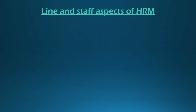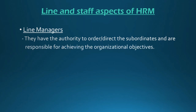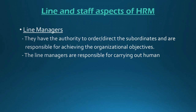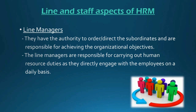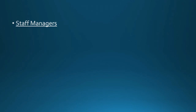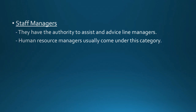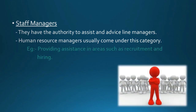Regarding the line and staff aspects of HRM: line managers have the authority to direct their subordinates and are responsible for achieving organizational objectives. Since they directly engage with employees on a daily basis, they carry out certain HR duties — for example, providing training for employees with regard to new projects and tasks. Line managers can be found in departments such as sales and production. HR managers usually fall under the category of staff managers; they have the authority to assist and advise line managers in areas like recruiting, training and grievance handling. Both line managers and staff managers are engaged in human resource management activities.